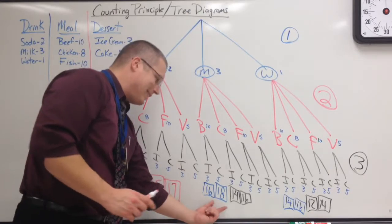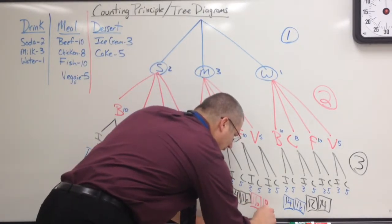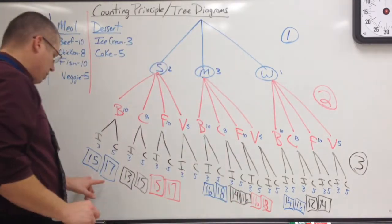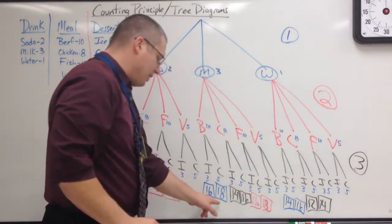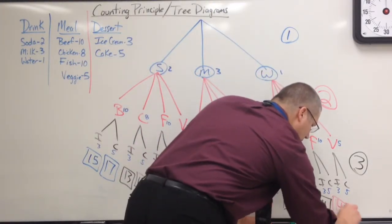Again, the beef meal. Beef and ice cream, 15. Beef, cake, 17. And that's including the soda. The milk was $1 more, so I added $1 more, so I added $1 to both of those. So now it went from 15 and 17 to 16 and 18. Now I'm going to go to the water. It used to be 15, 17. The water's $1 less, so I'm going to reduce these both by $1. Beef, 14, 16.